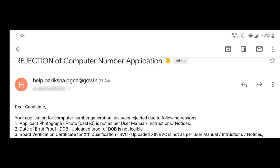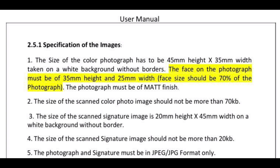Now let's take a look at the rejection email. The first reason: applicant photo is not as per user manual instructions. Let's read para 2.5.1 — specification of images — which you have to strictly adhere to. The size of the color photograph has to be 45 mm height and 35 mm width, taken on a white background without borders. The face on the photograph must be 35 mm height and 25 mm width. Face size should be 70% of the photograph.